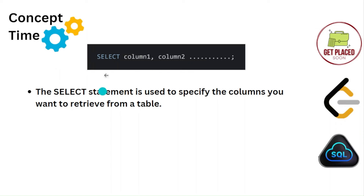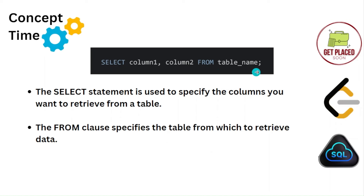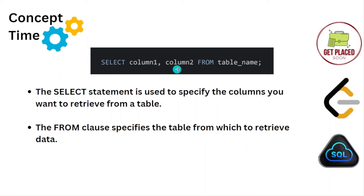This is not the entire statement. Once you select the column names, you need to specify from which table you are selecting them. The FROM clause specifies the table from which you are retrieving the data. You mention the FROM keyword, then the table name, and end the SQL statement with a semicolon. This is how you select columns from a table — when you run this, column one and column two will be displayed.